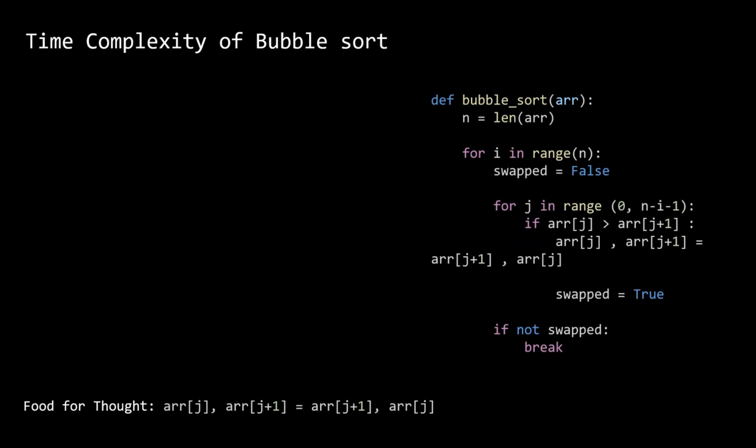And it runs from 0 to n minus i minus 1, so that means we have two loops. So i runs from 0 to n, and inside, j runs from 0 to n minus i minus 1. So the time complexity, or the average time complexity would be O(n times (n minus 1) over 2), and that is equivalent to O(n square).